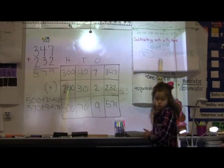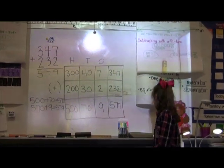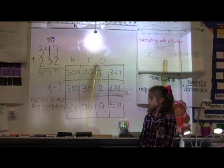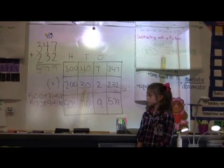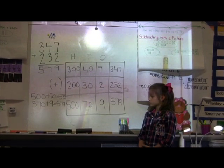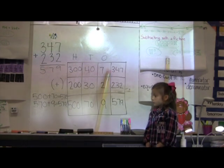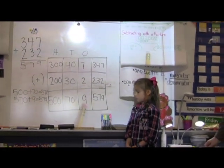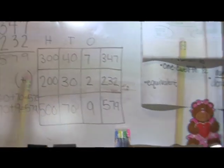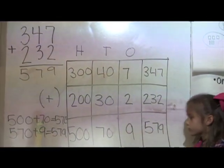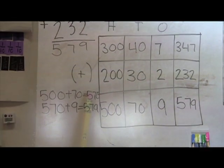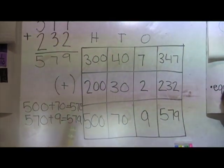Okay, so she did her hundreds. Then she came over and did her tens. 40 plus 30 was 70. And then she did her ones. 7 plus 2 is 9. And then she just added over here the 500 plus the 70. And then added in the 9 to get 579.